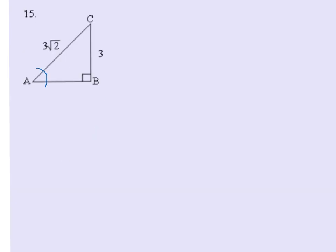In number 15, angle A is the bottom left angle. We are given the opposite, which is 3, and the hypotenuse, which is 3 root 2. So sine of angle A equals 3 over 3 root 2.